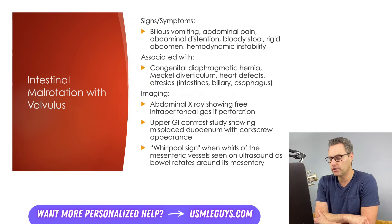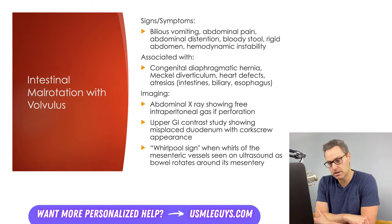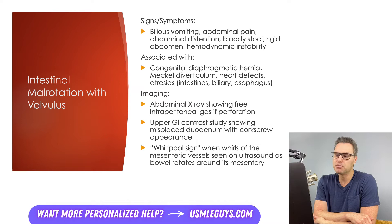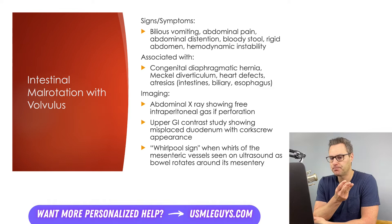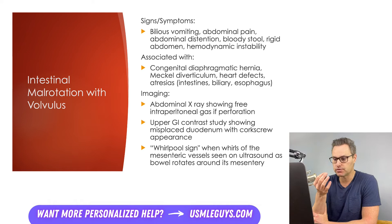Next is intestinal malrotation with volvulus. Intestinal malrotation occurs early in fetal development when the bowel fails to rotate and take its normal position in the abdomen. It doesn't always cause disease, but it does predispose patients to volvulus — when loops of intestine twist around themselves, causing bowel obstruction. Patients can present with bilious vomiting, abdominal pain, and abdominal distension. As bowel becomes necrotic from lack of blood supply, patients can develop bloody stools, a rigid abdomen from peritonitis, and hemodynamic instability.